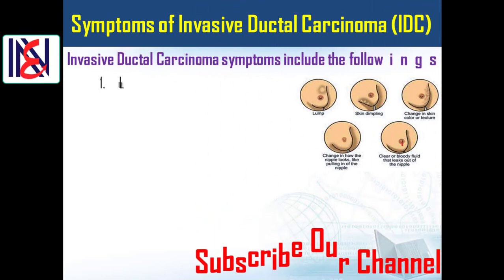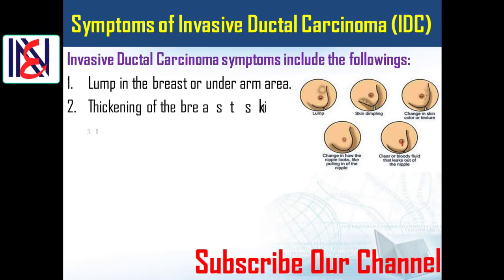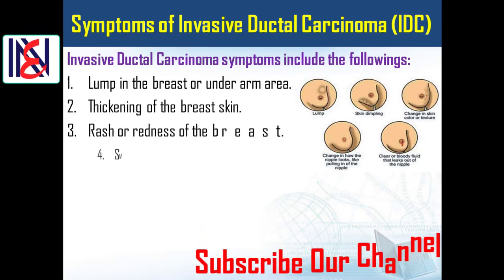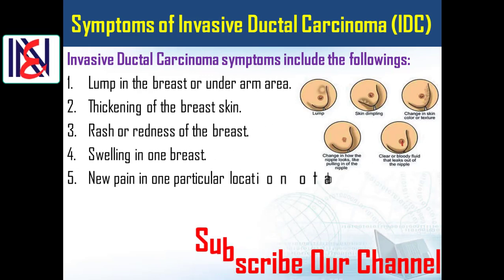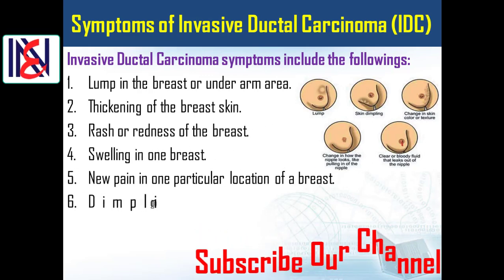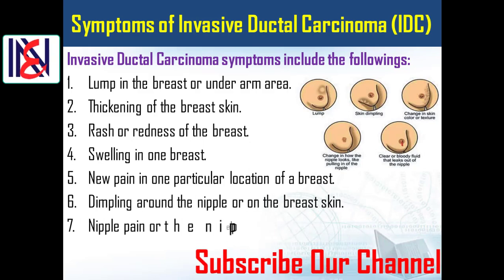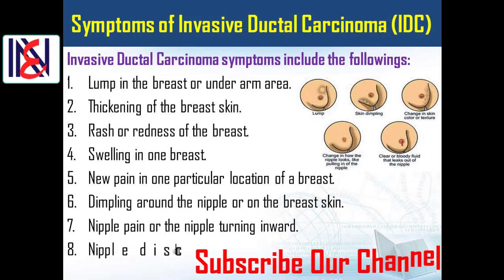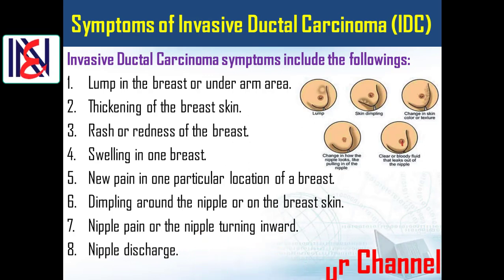One: lump in the breast or underarm area. Two: thickening of the breast skin. Three: rash or redness of the breast. Four: swelling in one breast. Five: new pain in one particular location of a breast. Six: dimpling around the nipple or on the breast skin. Seven: nipple pain or the nipple turning inward. Eight: nipple discharge.